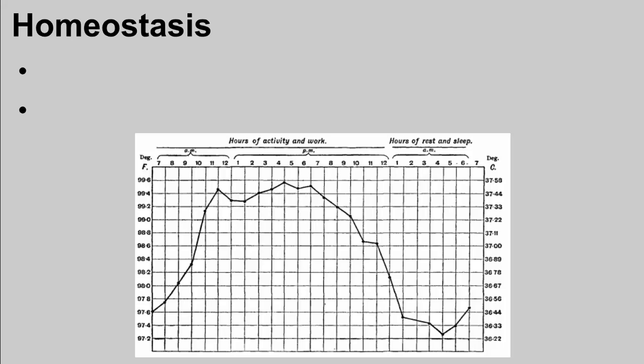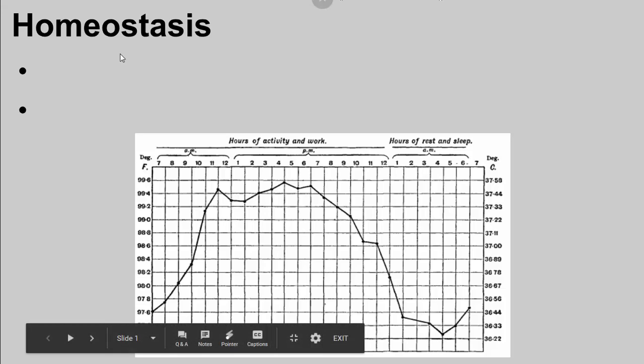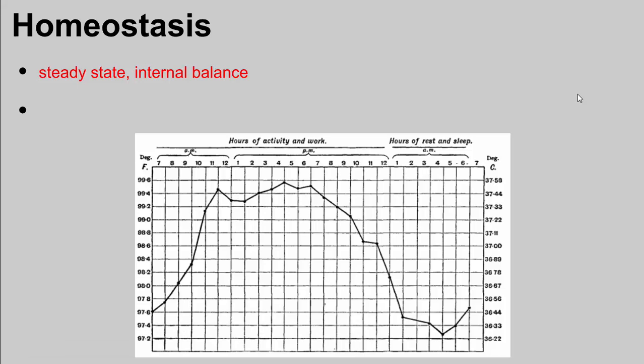So today we're just going to talk about some general information. I'm going to start to get into specific ways that living things maintain homeostasis. As you guys said at the beginning of class, the question of the day: homeostasis is the process of keeping things in balance. What conditions inside our bodies do we need to maintain at a certain level? What are some examples of what our body has to maintain?